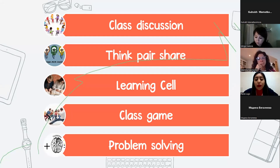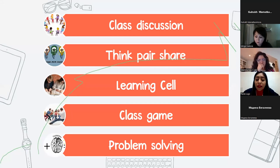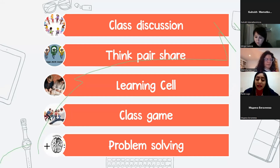Then we have learning cell. A learning cell is an effective way for a pair of students to study and learn together — a process where two students alternate asking and answering questions on commonly read materials. To prepare for the task, the students will read about a topic, and at the next class the teacher will randomly put students in pairs so they have to start talking about the topic.